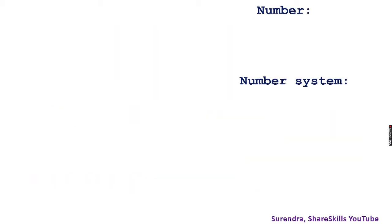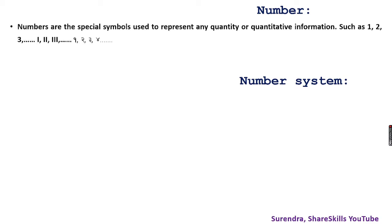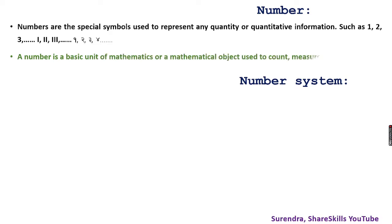Today we are going to talk about numbers and number systems. Numbers are special symbols — like characters — which have predefined names and functions. They are special symbols used to represent any quantity or quantitative information.